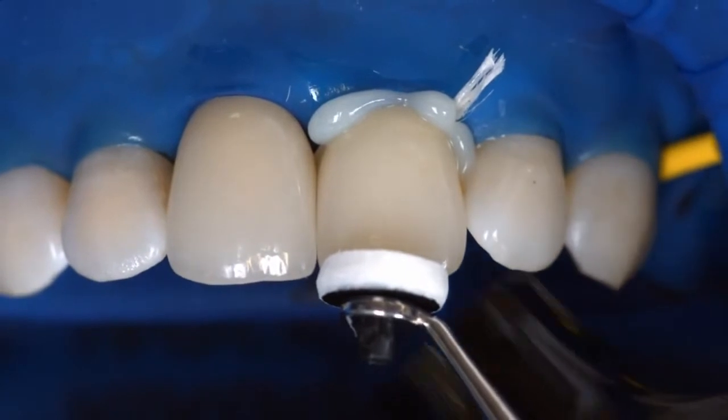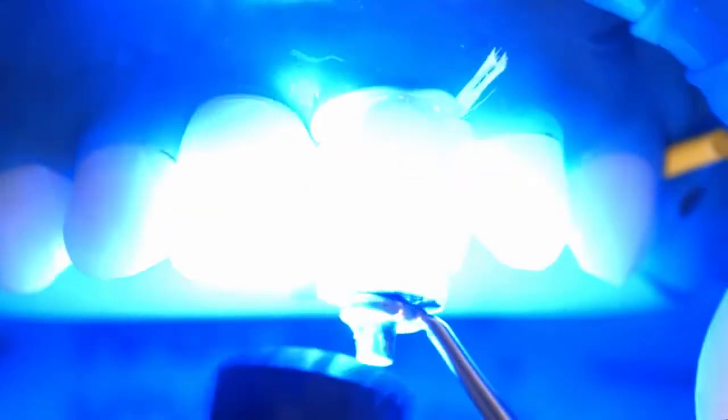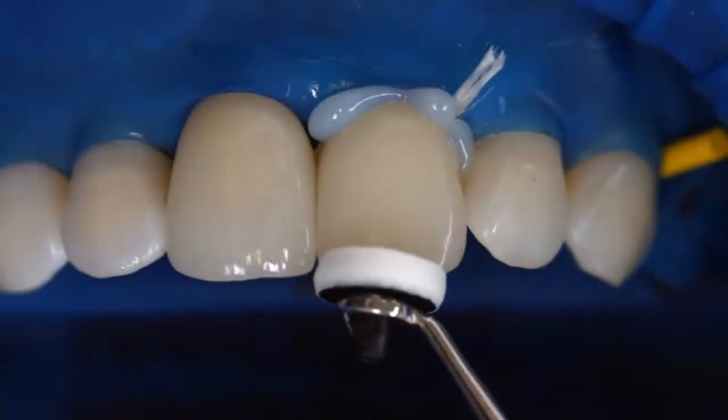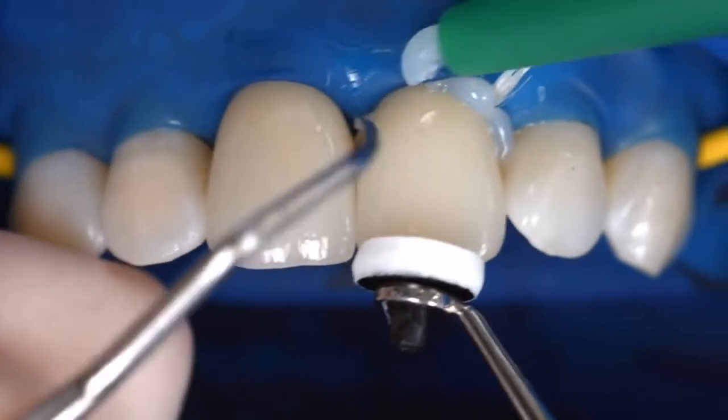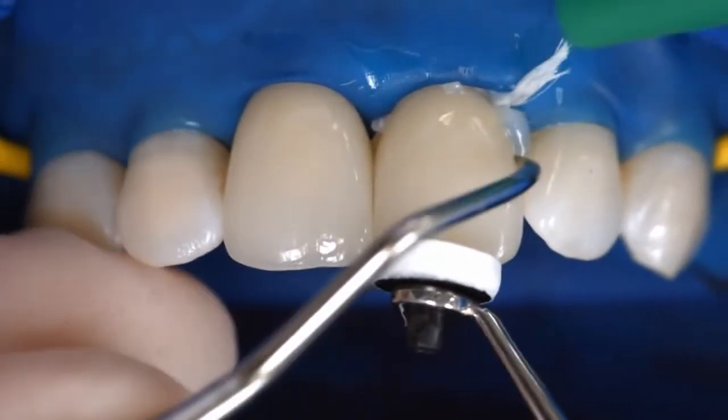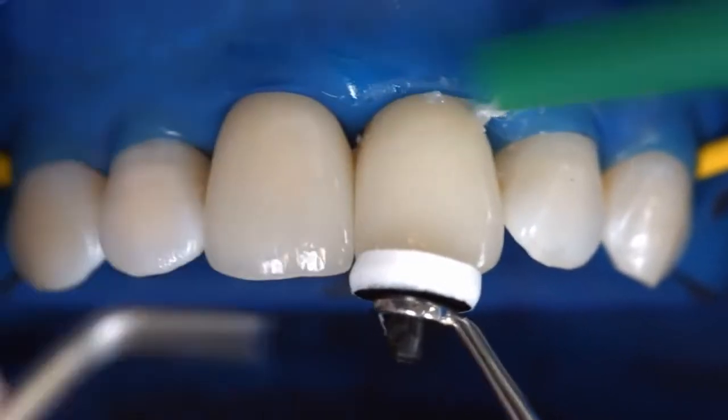Light cure cement excess using the Bluephase Style, for example. Start with the palatal surface and move the light guide in a circle along the entire cement line in the course of 2 seconds. Make sure that the distance between the light probe and the restoration is between 10 and 15 millimeters.